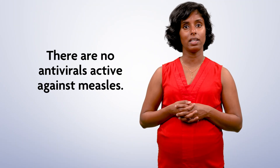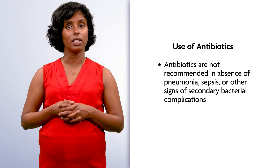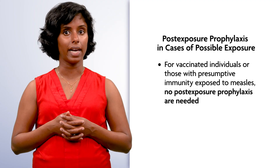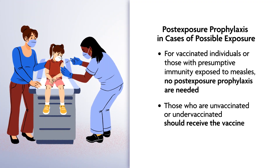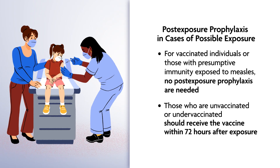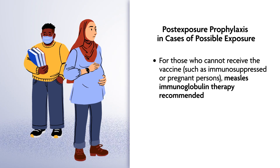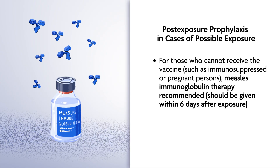Currently there are no antivirals active against measles. Management involves mitigation of complications and early detection and patient isolation to prevent transmission. Antibiotics, in the absence of secondary bacterial complications such as pneumonia or sepsis, are generally not recommended. Those exposed who have presumptive immunity need no additional post-exposure prophylaxis. Unvaccinated or under-vaccinated individuals should receive the vaccine within a day or two of exposure. If a patient cannot receive the vaccine due to immunosuppression or pregnancy, measles immunoglobulin is recommended — ideally given within several days of exposure.